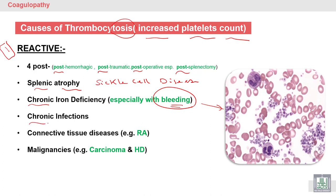Chronic infection also causes increased platelet counts through reactive release of platelets from megakaryocytes in the bone marrow, increasing platelet productivity. Connective tissue disorders — such as autoimmune or alloimmune diseases, rheumatoid arthritis and other immunological diseases — as well as malignancies like carcinoma and Hodgkin disease are also reactive causes, all involving increased megakaryocyte activity in the bone marrow.